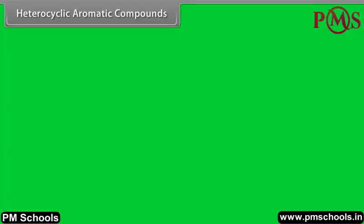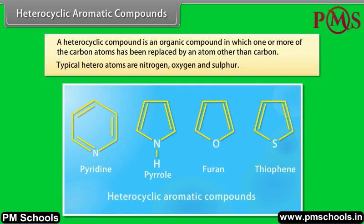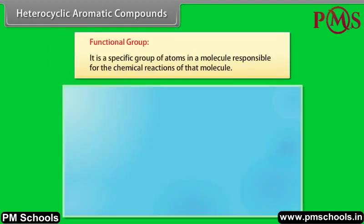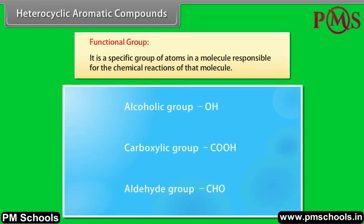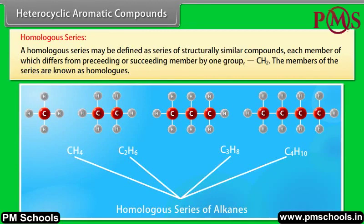Heterocyclic aromatic compounds: a heterocyclic compound is an organic compound in which one or more of the carbon atoms have been replaced by an atom other than carbon. Typical heteroatoms are nitrogen, oxygen, and sulfur. Functional group: it is a specific group of atoms in a molecule responsible for the chemical reactions of that molecule. Homologous series: a series of structurally similar compounds where each member differs from the preceding or succeeding member by one CH2 group. The members are known as homologs.